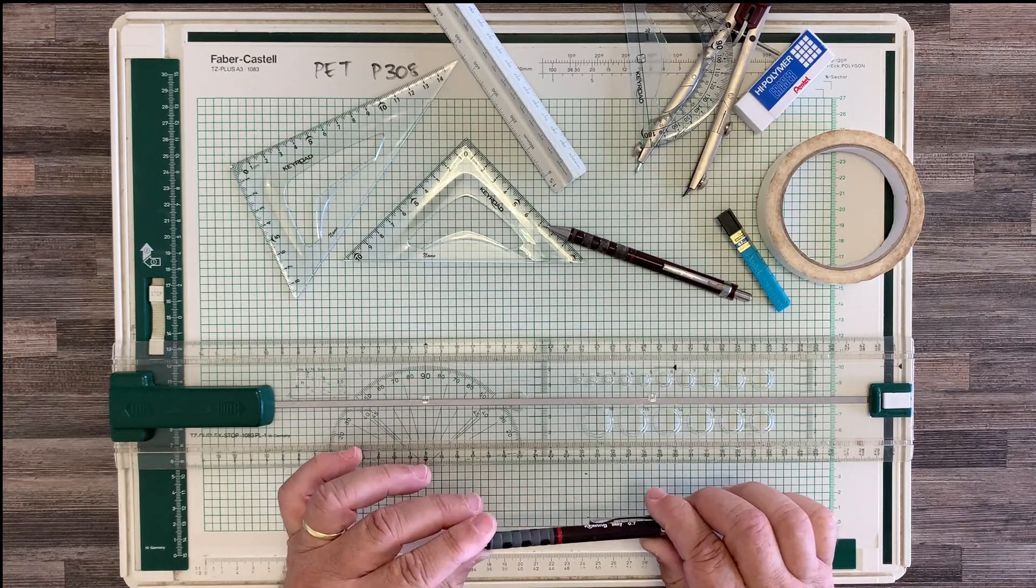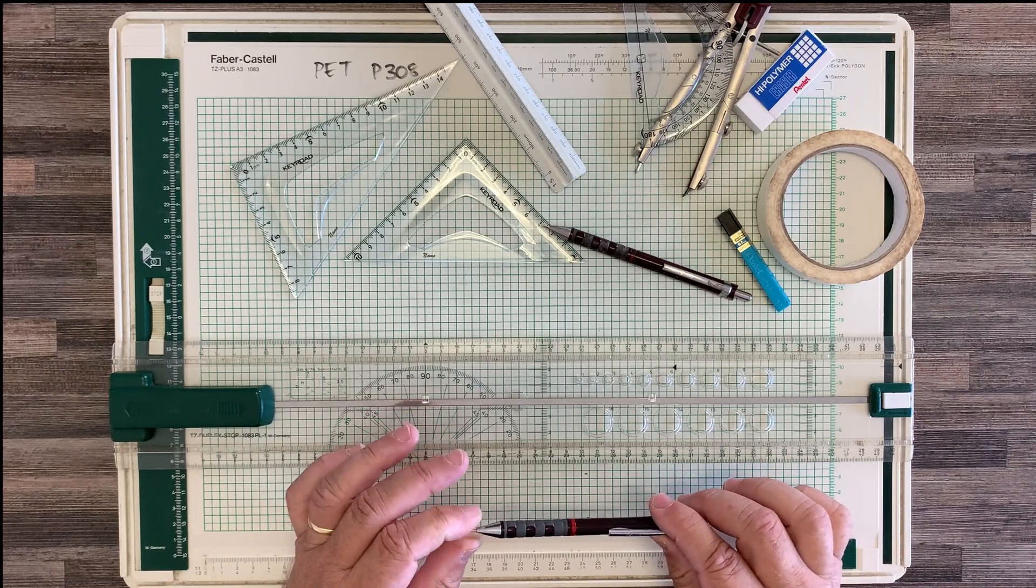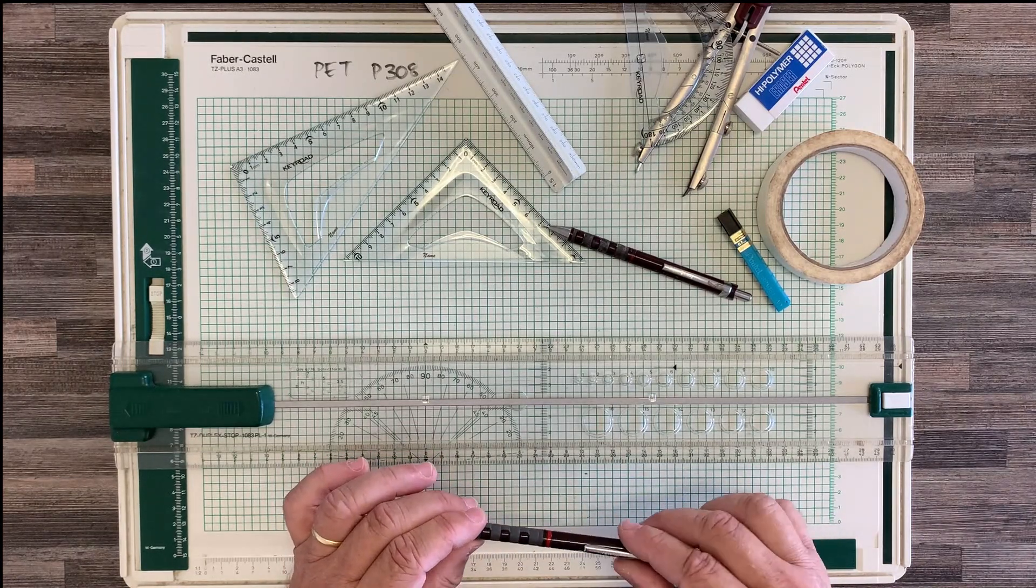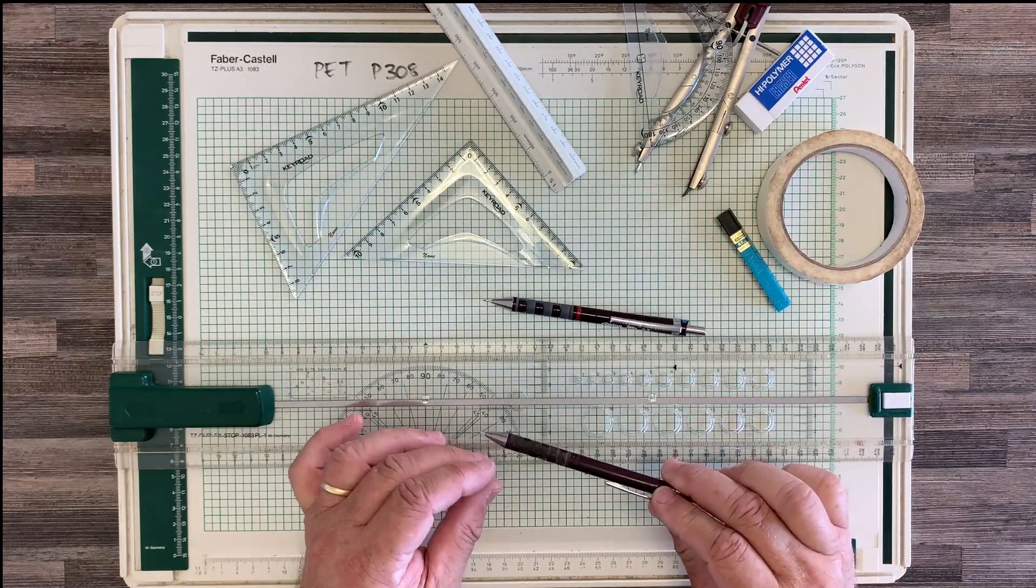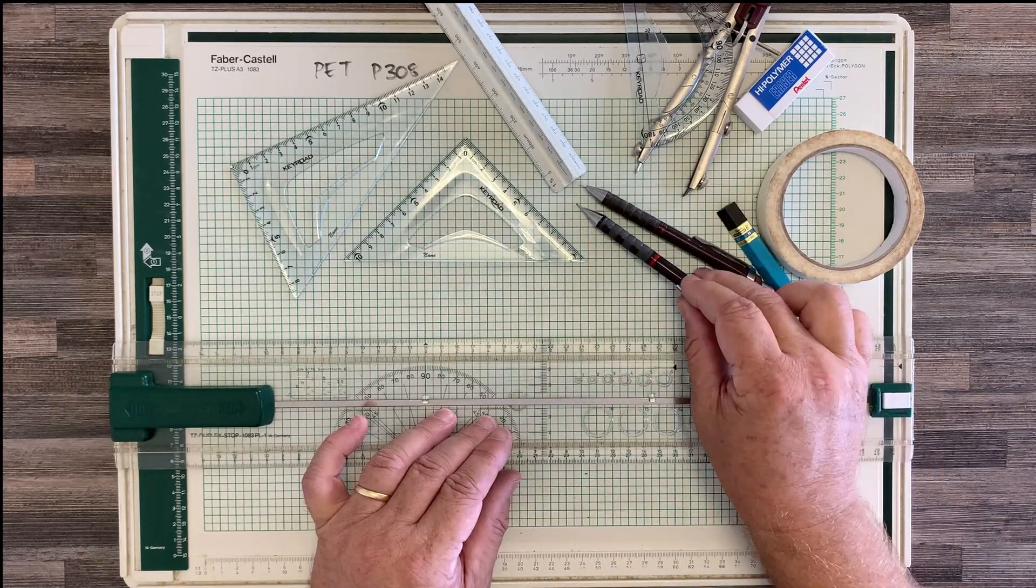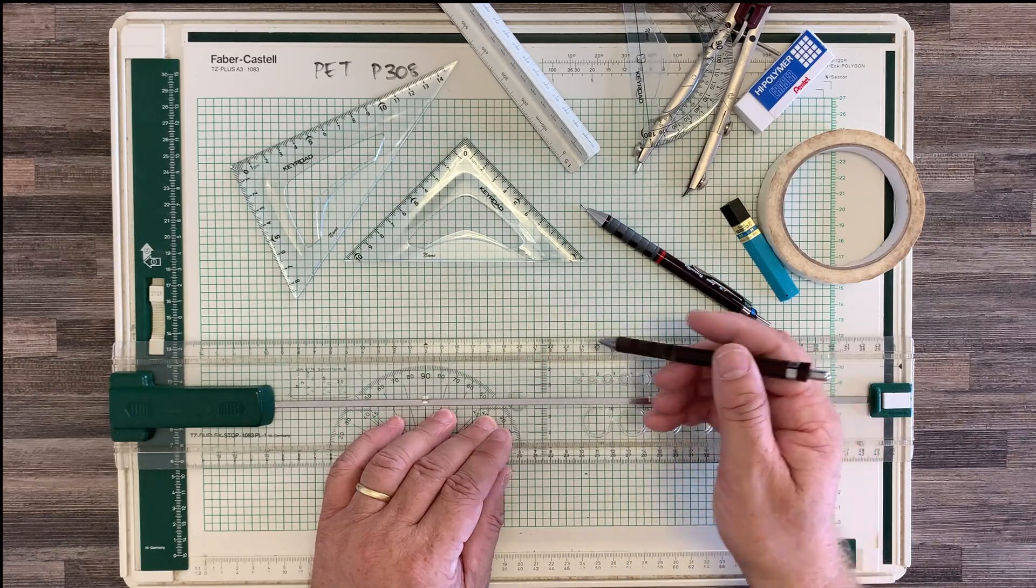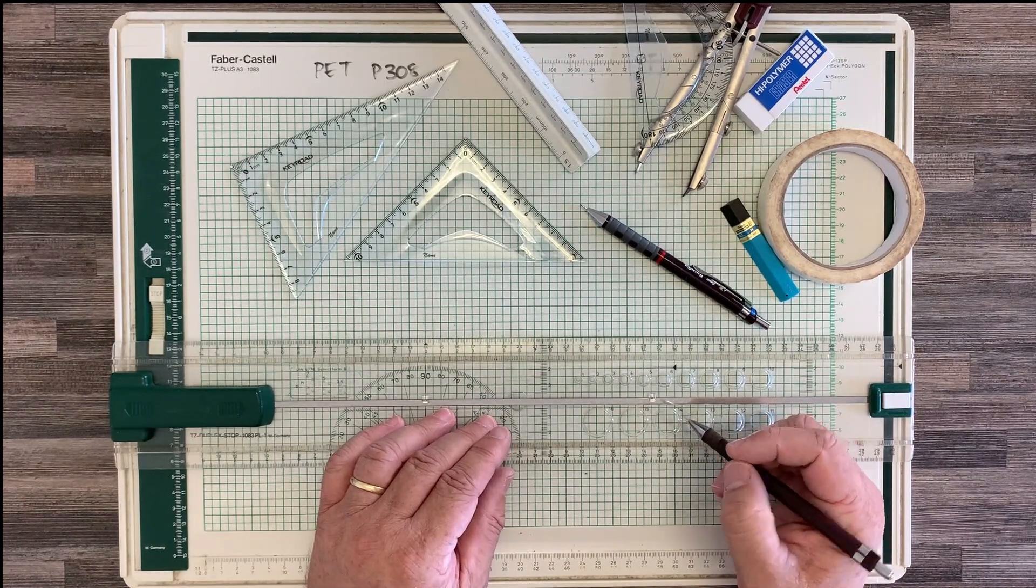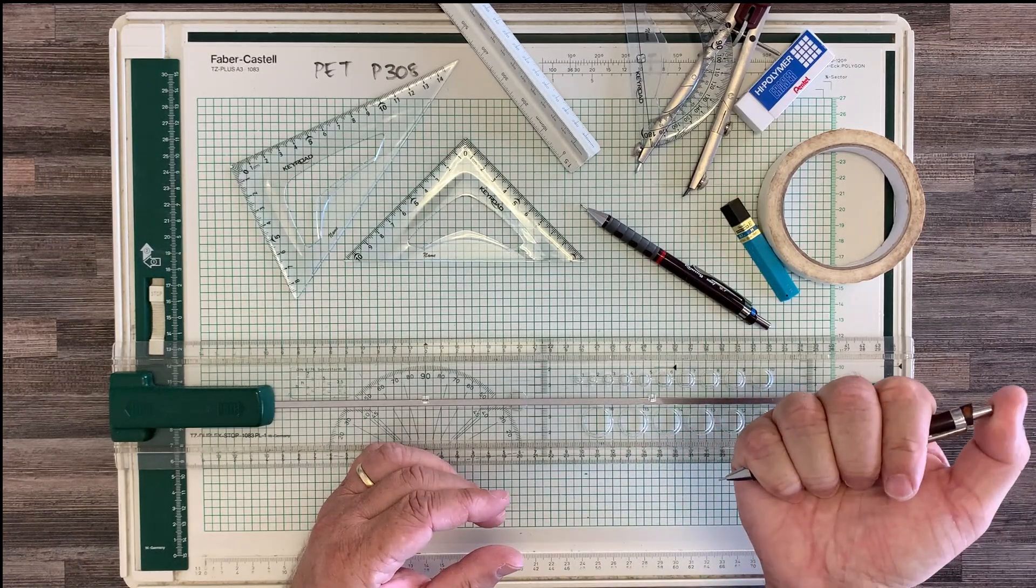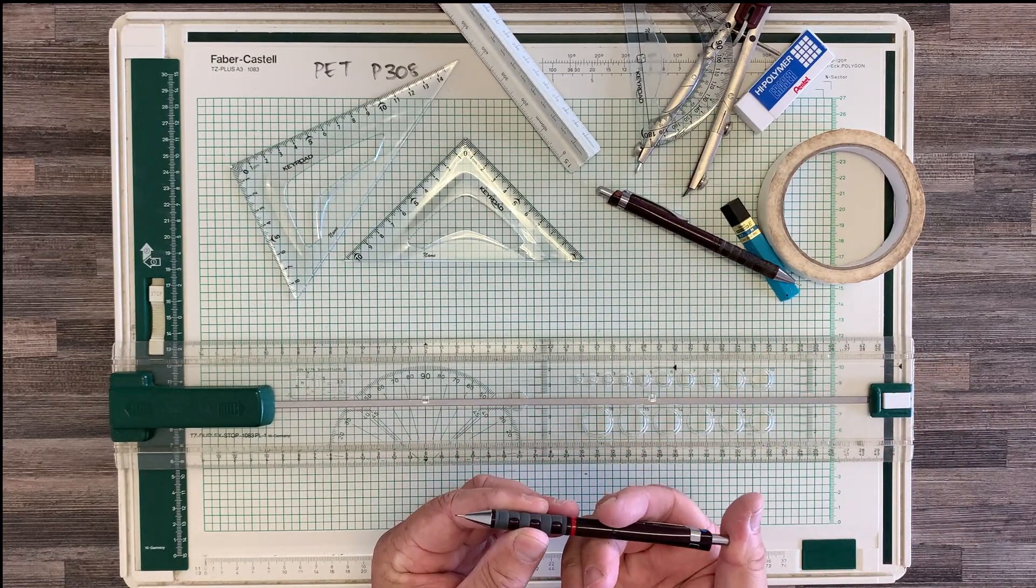The instructions are that you get a 0.5 millimeter thick lead and a 0.35. Personally, I feel the 0.35 is a little bit too thin, so for my exercises I'm using a 0.5 and a 0.7. But you can get away with just a 0.5 if you're very careful and you draw very lightly for your construction lines and then you press much harder to go over again for your main outlines.